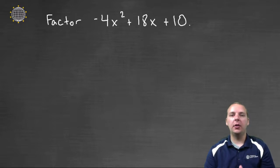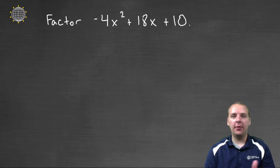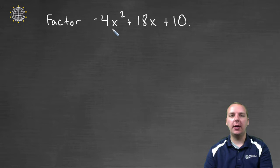In this example, let's try to factor the polynomial -4x² + 18x + 10. I see a couple things right off the bat. Number one, this is a trinomial because it has three terms, and it's a quadratic trinomial because it starts off with an x².